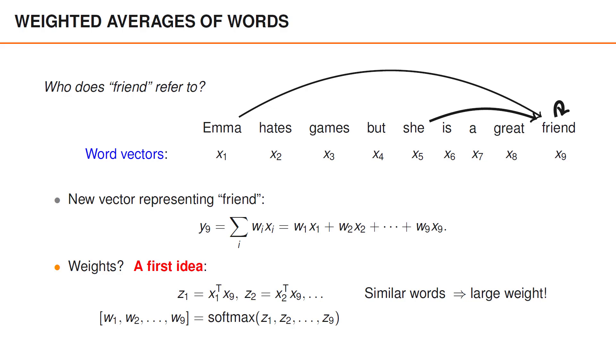This strategy for computing weights has been used in some contexts but it's far from obvious that it would give reasonable weights. Perhaps we shouldn't just give large weights to words with similar word embeddings.